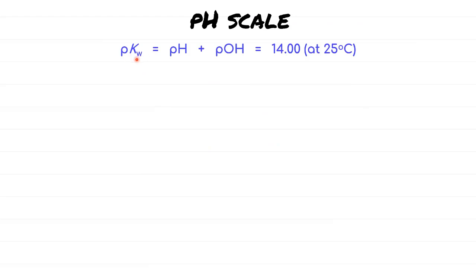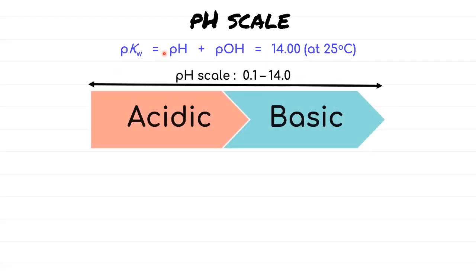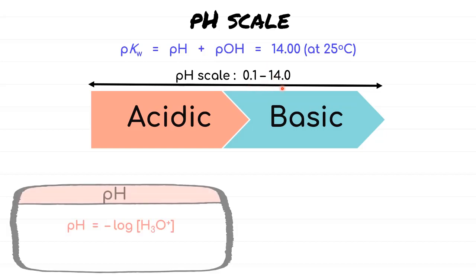From the product constant of water, Kw, with value of 10⁻¹⁴, if we apply negative log, it gives a pKw of 14. This value tells us information regarding acid and base. A scale that measures both H3O+ or H+ and also OH− ions is known as the pH scale, ranging from 0 to 14. pH has the formula of negative log of the concentration of H+ or H3O+, which characterizes the acid.